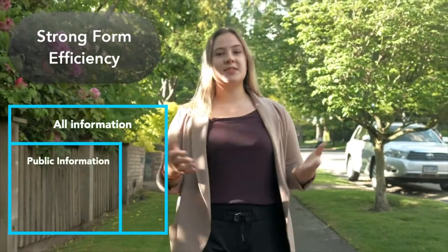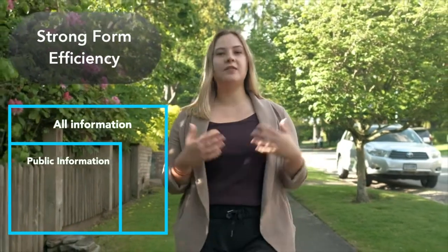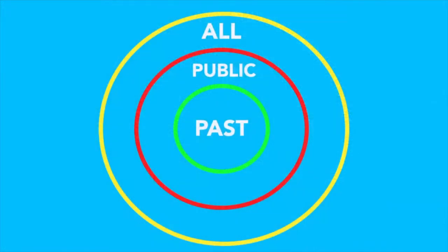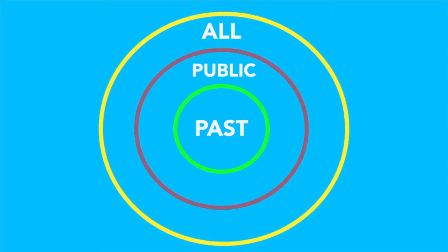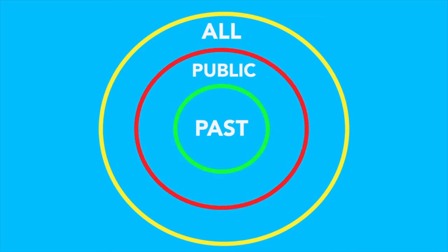And if these markets are semi-strong form efficient, then they must also be weak form efficient, since all of the past price information is also reflected in these prices. We can think of the relationship between these three hypotheses using this diagram. In strong form efficiency, prices capture all information, including public information and past price information. In semi-strong form efficiency, prices capture only public information, which includes past price information. In weak form efficient markets, prices only capture past price information.